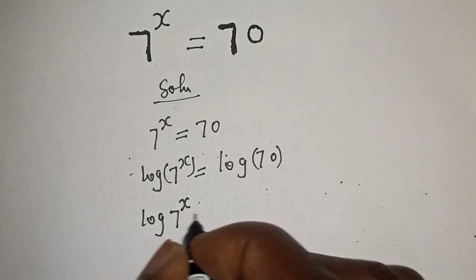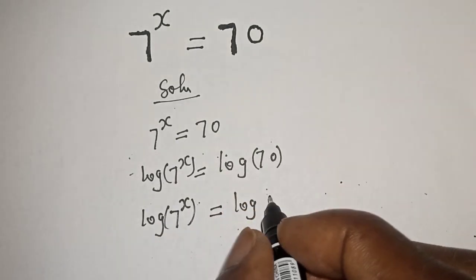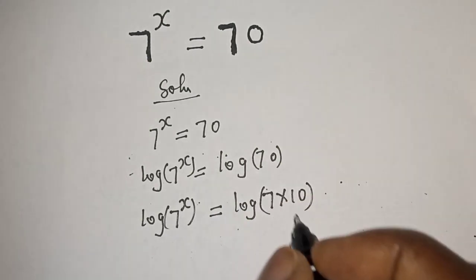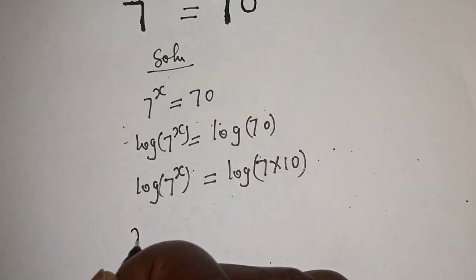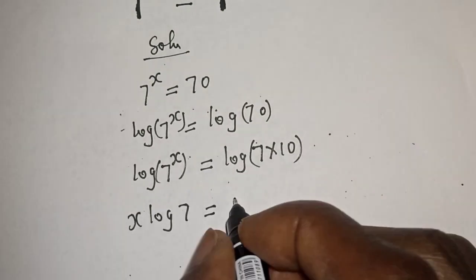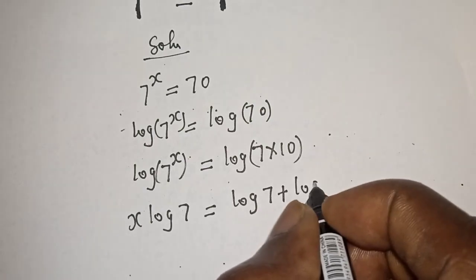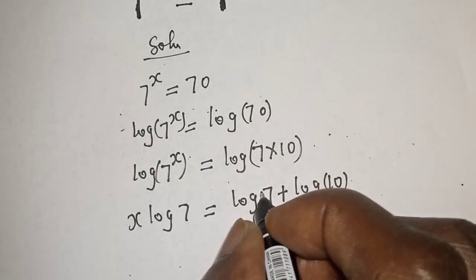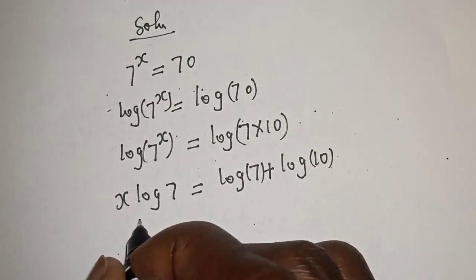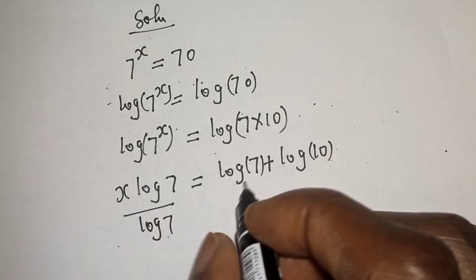Log seven raised to power x is equal to log 70 can be written as seven multiplied by ten. x log seven is equal to log seven plus log ten. Let's divide both sides by log seven.